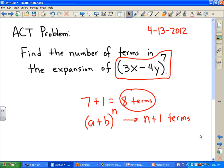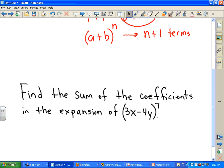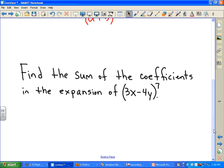Now we could extend the problem a little bit, and we could ask for the sum of the coefficients in the expansion of 3x minus 4y raised to the 7th power. So again, we would have to expand all of this out, and we would then add up all the coefficients of the 8 terms.